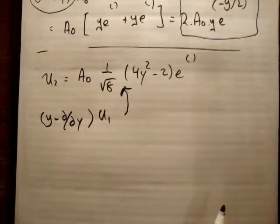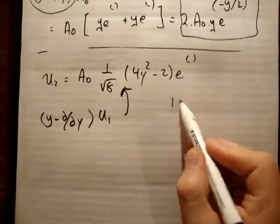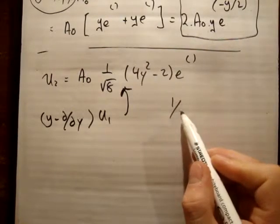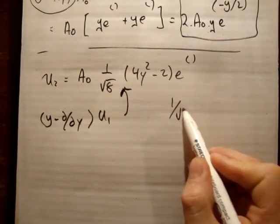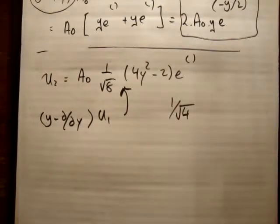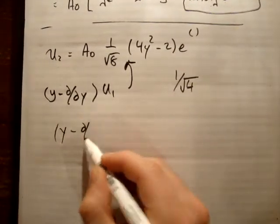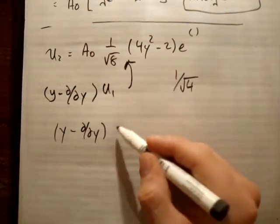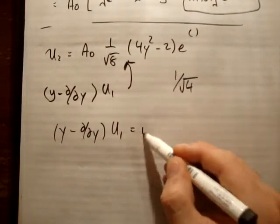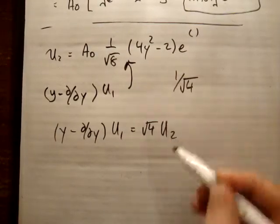And in actual fact, when you do that, you're going to be out by 1 over root 4. Alright? So it's out by 1 over root 4. So what we have is as follows. If we apply Y minus DDY on U1, we're going to get root 4 times U2. Okay?